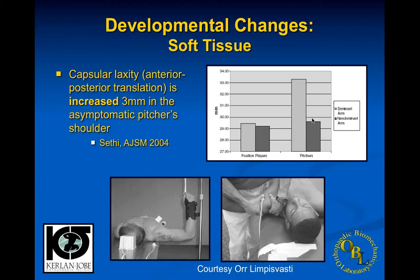There have been surgical treatments in the past - tightening of the anterior capsule, laser tightening, and Morgan would go in and release the posterior capsule. Now typically the way it's treated is that after a pitcher pitches, they do stretching exercises to try to regain internal rotation and allow rest.